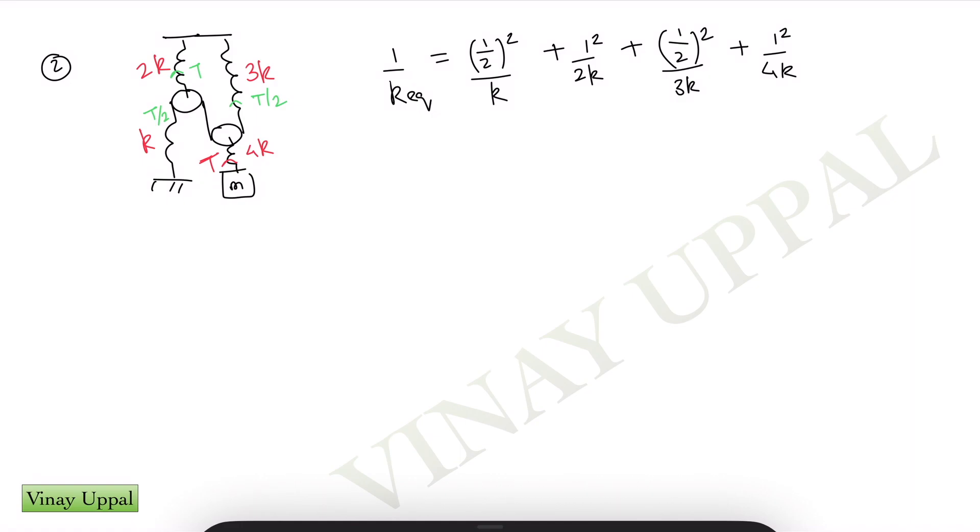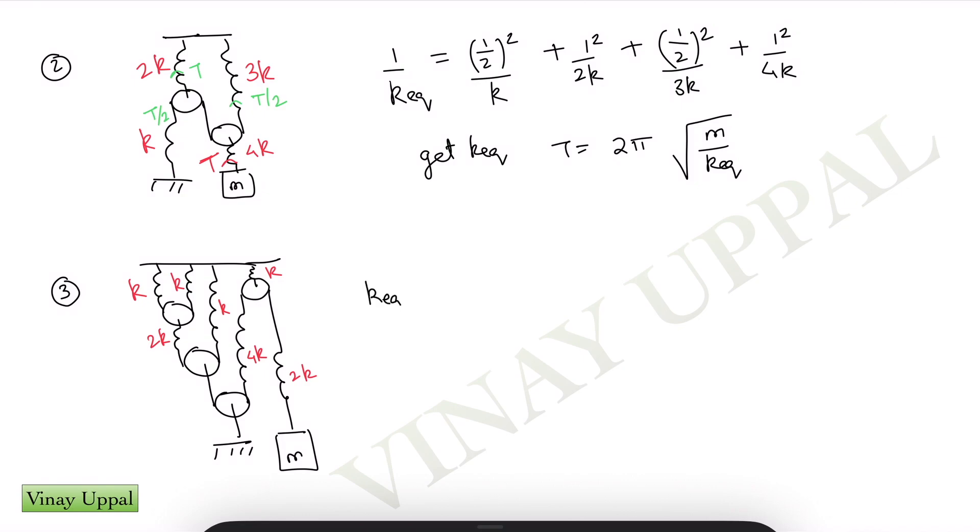I am not going to solve it for you. Now you guys can do that. Just get the value for k equivalent. And time period would simply be 2 pi root m by k equivalent. So it's that simple. Hope you guys have understood. I think now you guys can try it out. Let me just give you another example. And you guys can try this out and post your answer in the comment section. So find out k equivalent in terms of k. And post your answer in the comment section. I will have a look. I think all of you should be able to get the correct answer.